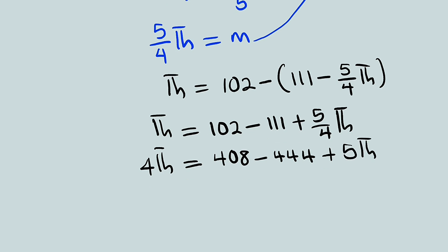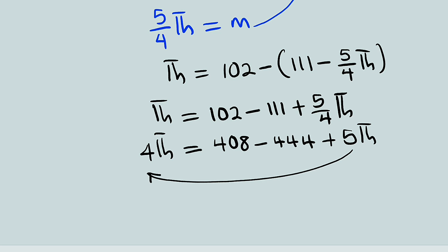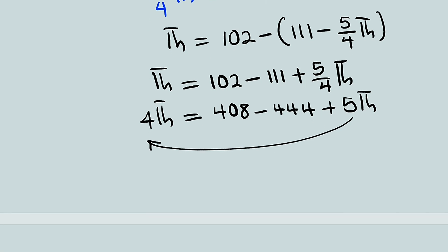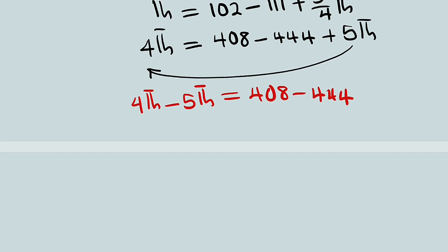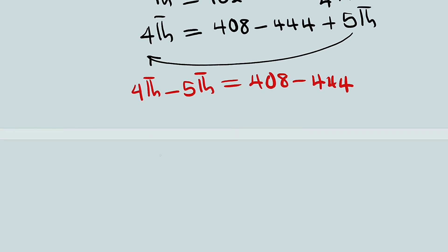Let us collect the like terms by taking this one backward. So we have 4 TH minus 5 TH as 5 crosses over. This is equal to 408 minus 444. We are almost done. To the left hand side, we have 4 minus 5 is negative 1. So we have negative TH, which is equal to 408 minus 444 is negative 36. Multiply both sides by negative 1. We have TH equal to 36.